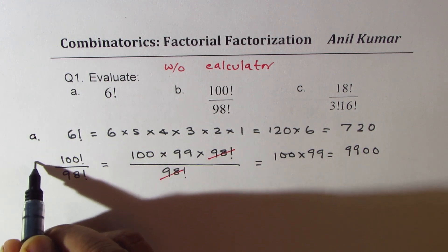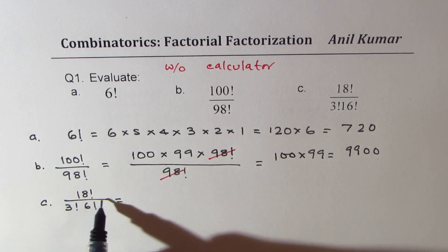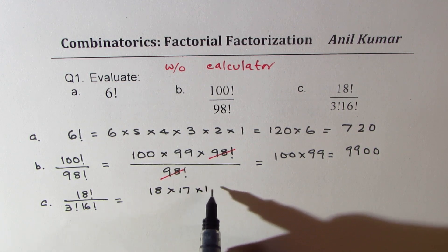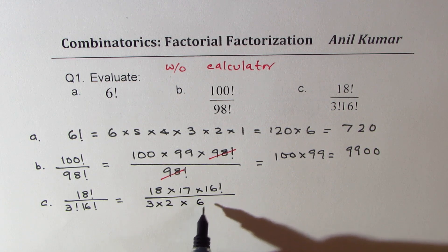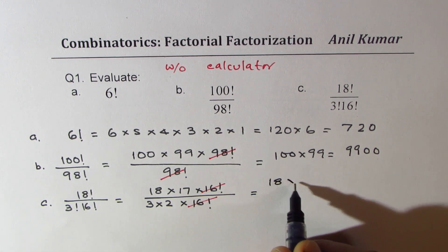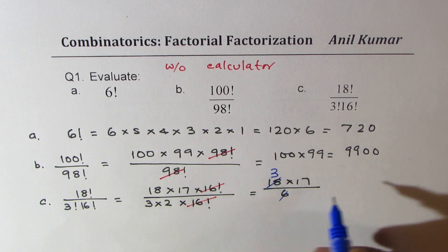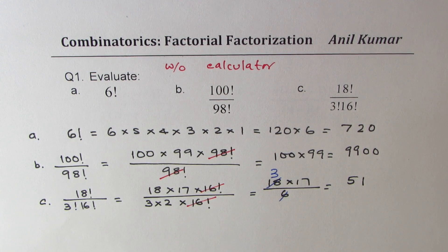Let's do part C: 18 factorial over 3 factorial times 16 factorial. We can write 18 factorial as 18 times 17 times 16 factorial. In the denominator, 3 factorial is 3 times 2, which is 6, and we have 16 factorial. The 16 factorials cancel, leaving 18 times 17 divided by 6. Since 6 times 3 equals 18, we simplify to 17 times 3, which gives 51.